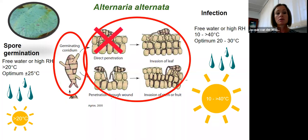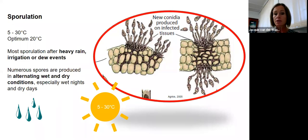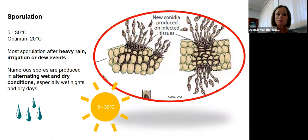Sporulation of both pathogens occurs anywhere between 5 and 30°C with an optimum around 20°C. We see most sporulation occurring after heavy rain events, irrigation, or dew. Most spores are produced when we have alternating wet and dry conditions — particularly wet conditions at night followed by dry days. For example, a heavy dew period at night followed by drying during the day will produce many spores, which are then disseminated during the day, leading to epidemic development.